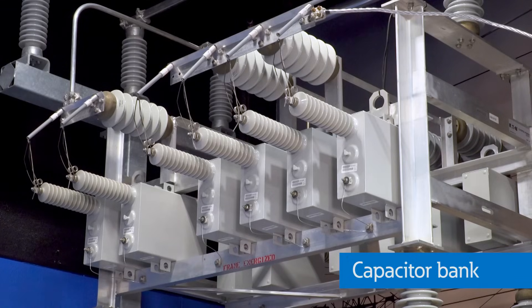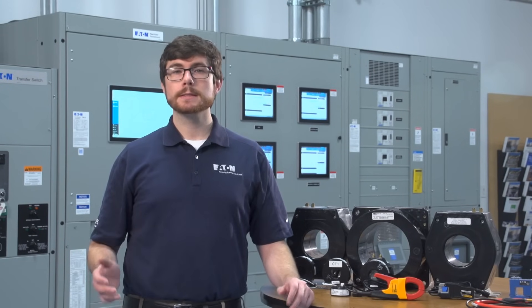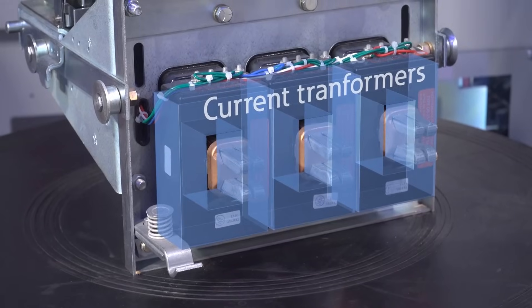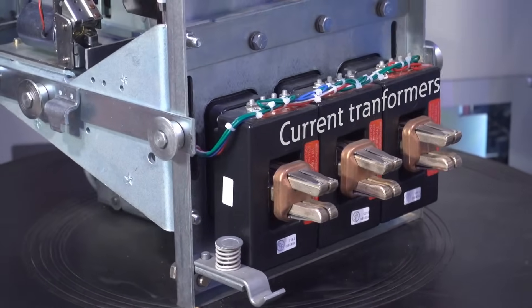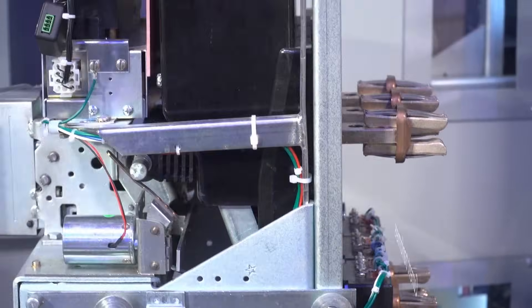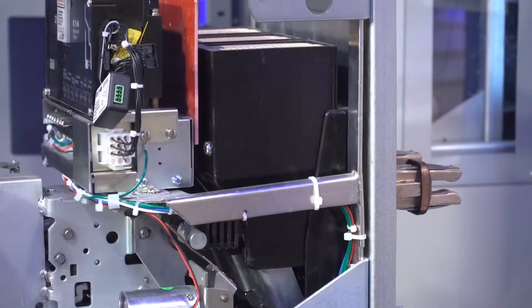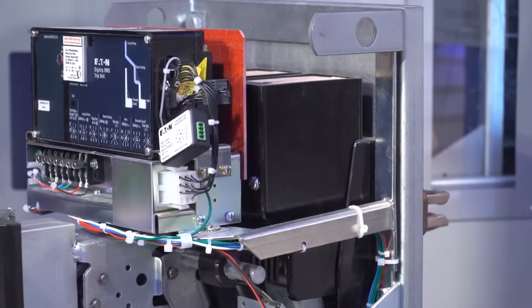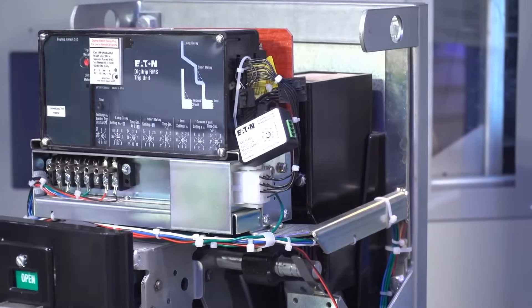Permanent CTs are also used to monitor power and power factor so that real and reactive power can be optimized. On the protection side, CTs can be used in combination with trip units for low-voltage circuit breakers and relays for medium-voltage breakers to trip the breaker when there are overloads or faults on the system.